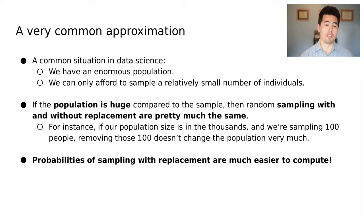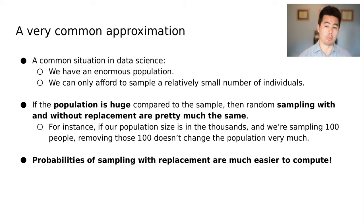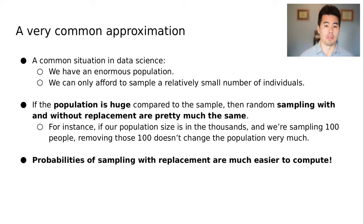Mostly this is because it makes all of the math a lot easier, since we don't have to account for how our pool changes each time we pull out a sample. If we're allowed to pull that sample out again, the distribution can remain the same throughout repeated trials. So just a small caveat, but good to be upfront with.